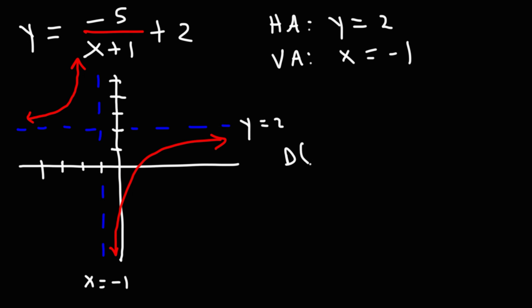So it's going to look something like this. Now let's write the domain. So looking at it from left to right, it's going to go from negative infinity to the vertical asymptote, which is negative 1, to the right side of positive infinity. So it's negative infinity to negative 1, union negative 1, to infinity.